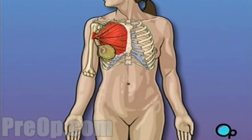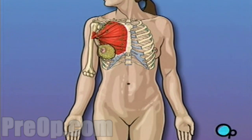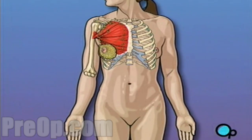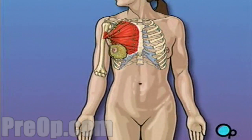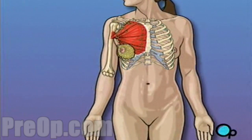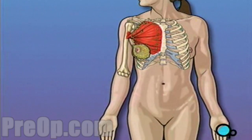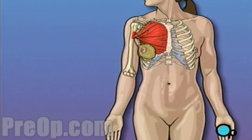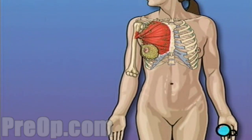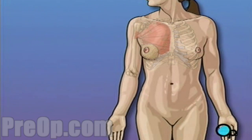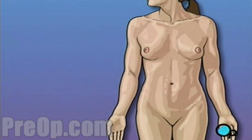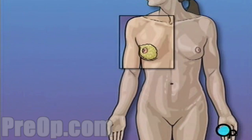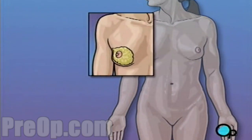In most cases, mastectomy is required in order to remove cancerous tissue from the body. The extent of tissue removed is determined by the amount of cancer present in your body. A modified radical mastectomy is one of the most extensive forms of breast cancer surgery, calling for the complete removal not only of the breast, but of the lymph nodes as well.